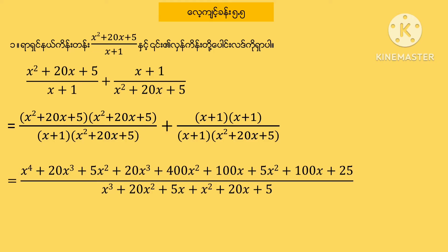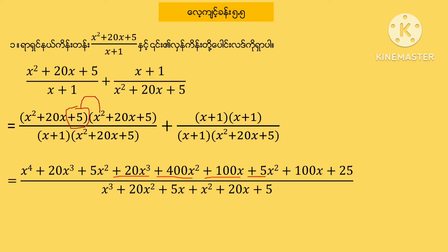More than twenty-eight plus four, about twenty years — this is going to be 28. Then 28 plus 20x plus 400x squared, plus 28 plus 5 plus 100x plus 25.